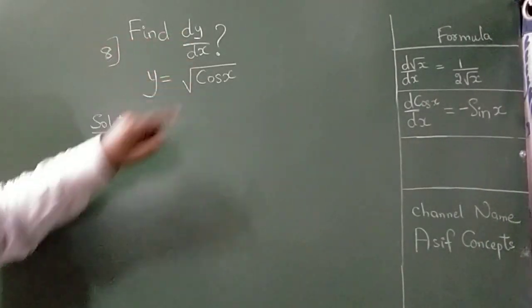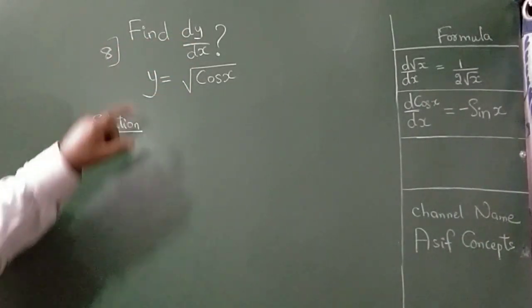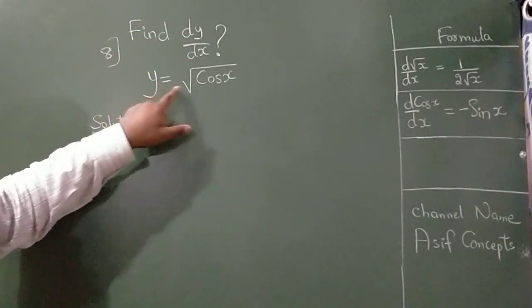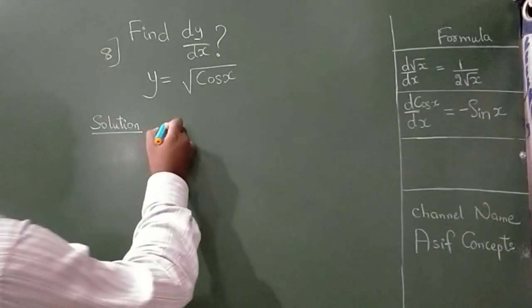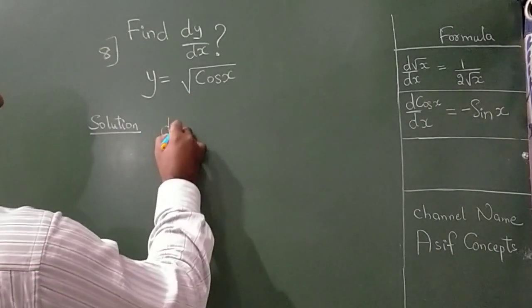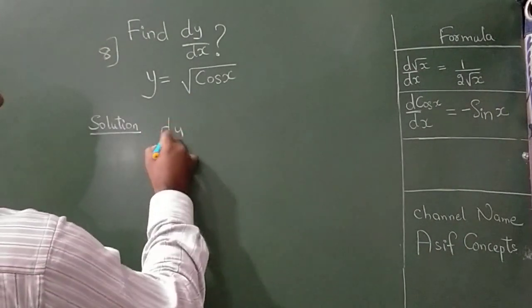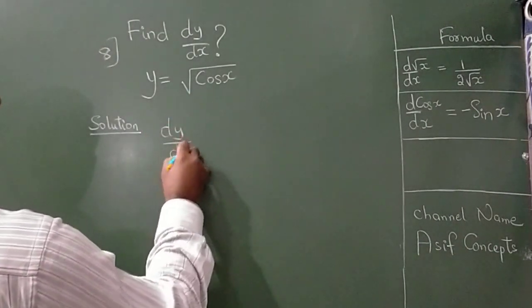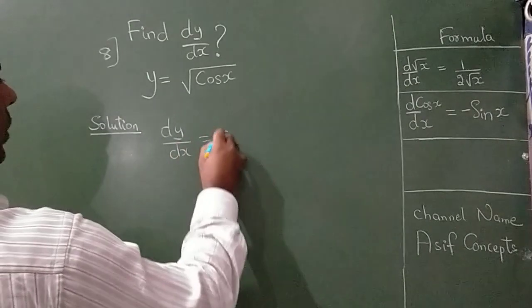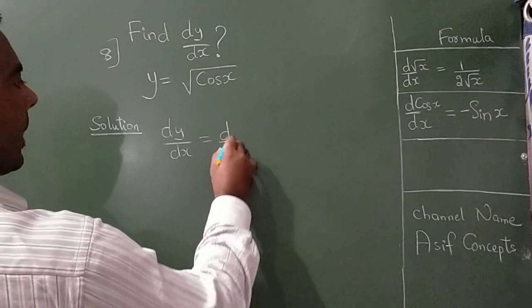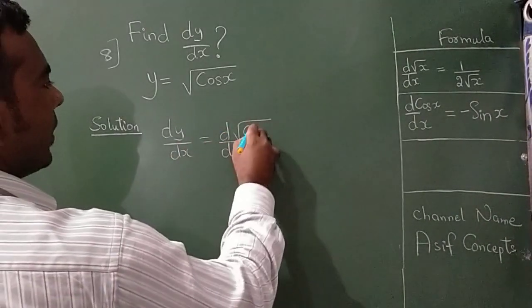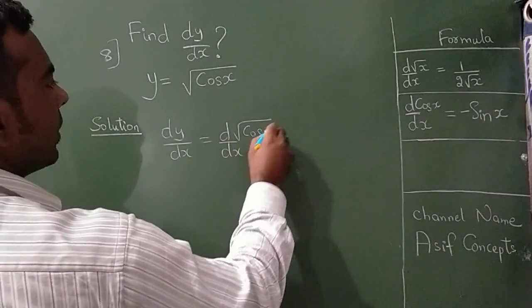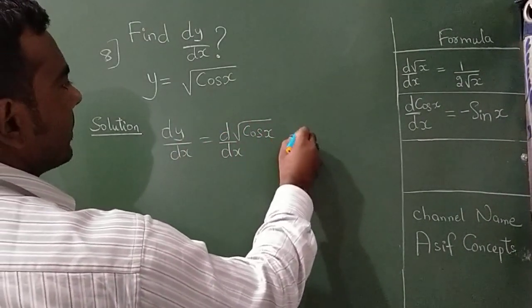Find dy by dx if y is equal to square root of cos x. dy by dx is equal to d by dx of square root of cos x.